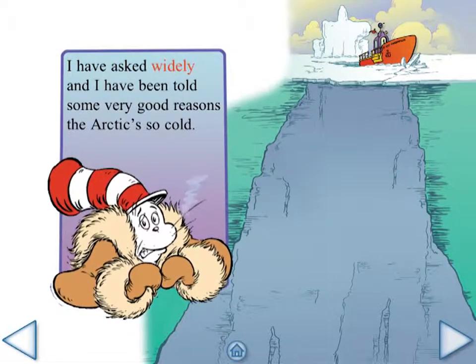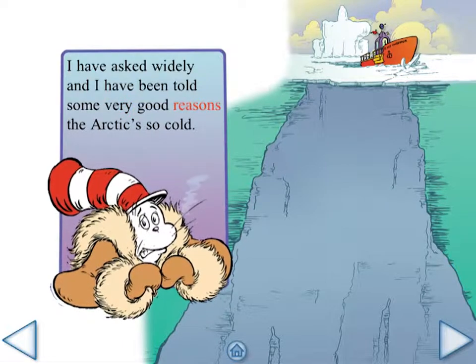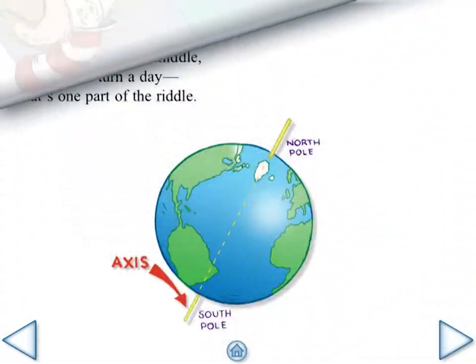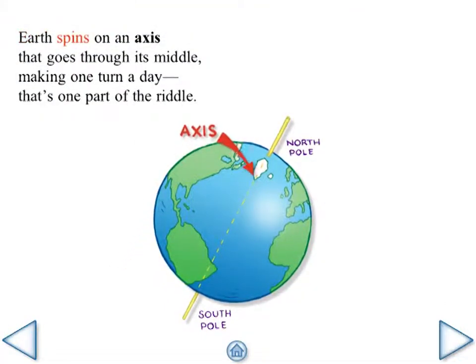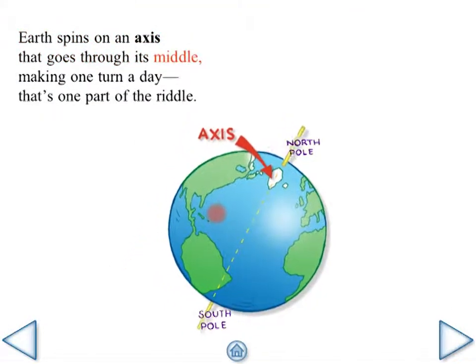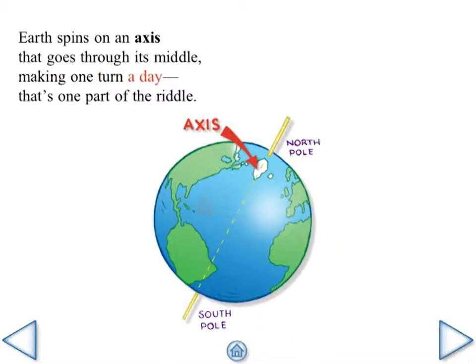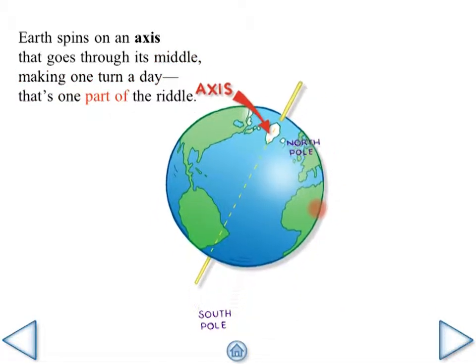I have asked widely and I have been told some very good reasons the Arctic's so cold. Earth spins on an axis that goes through its middle, making one turn a day. That's one part of the riddle.